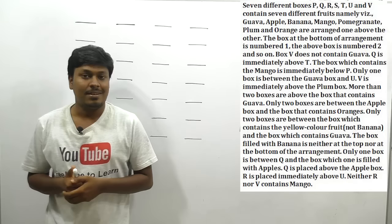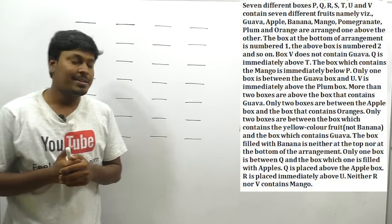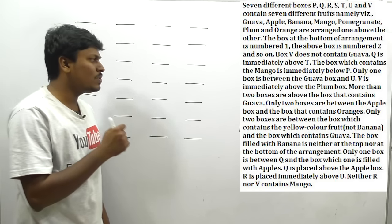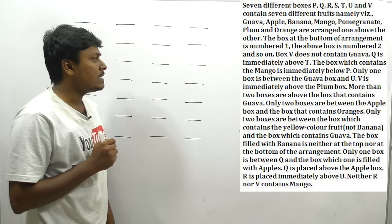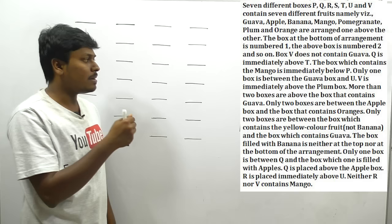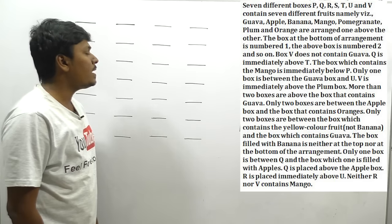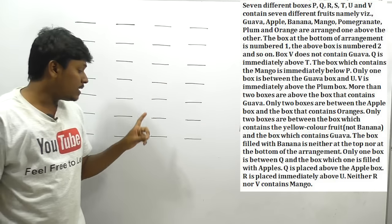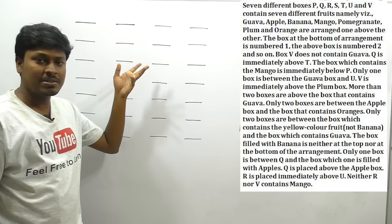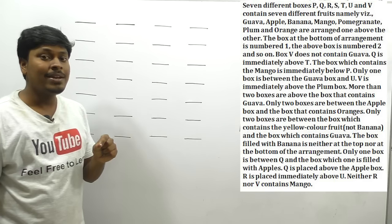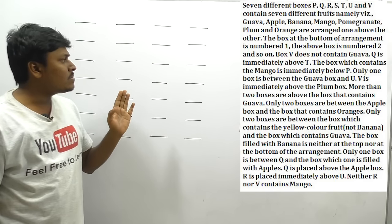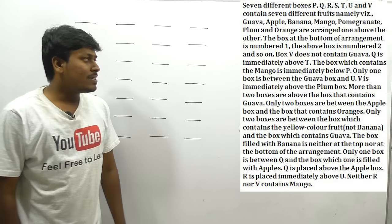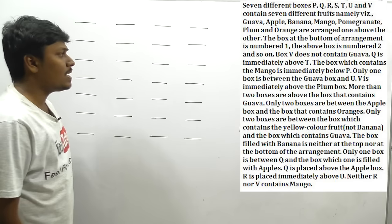Now let me move on to the arrangement question. Seven boxes P, Q, R, S, T, U, V contain seven different fruits, including guava and mango. They are arranged one above the other — the box at the bottom is number one and the box above is number two, and so on. The bottommost box is number one and the topmost is number seven. Our target is to find which box is at which position and which box contains which fruit.